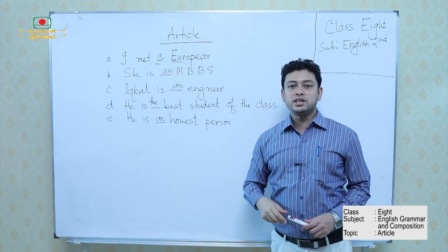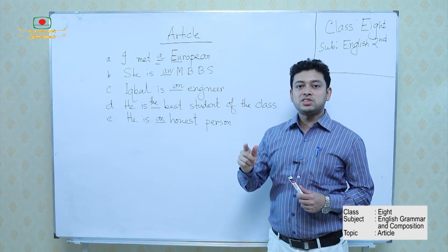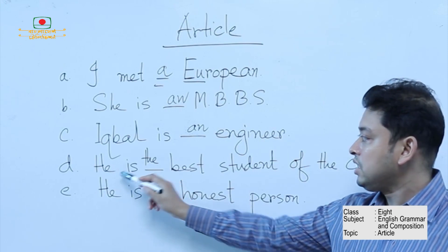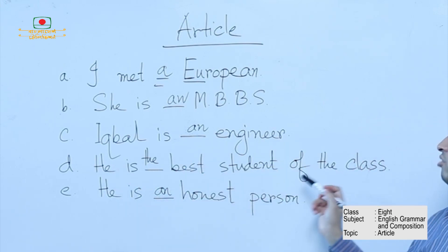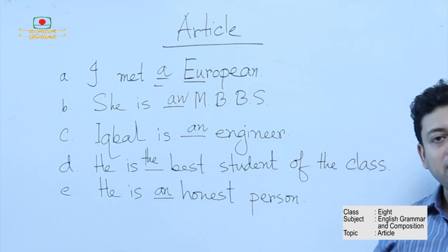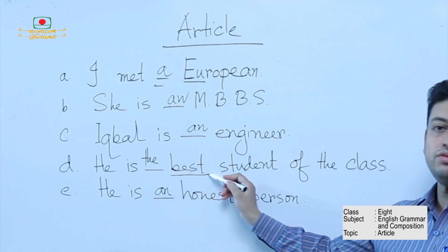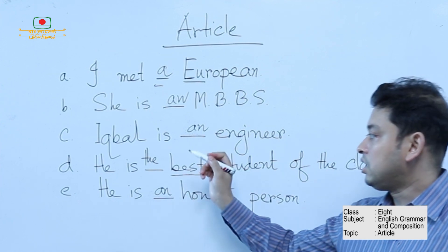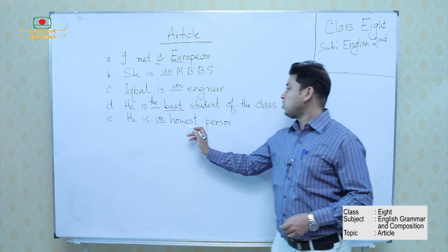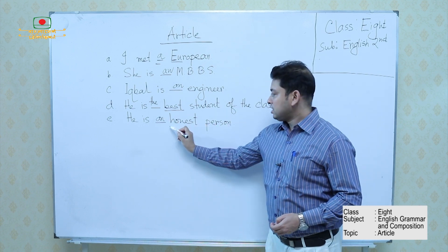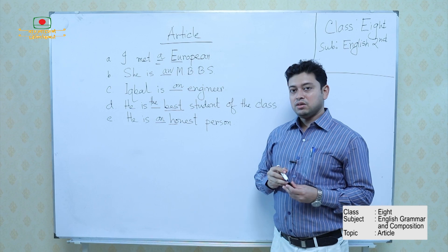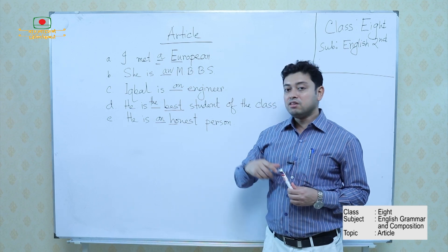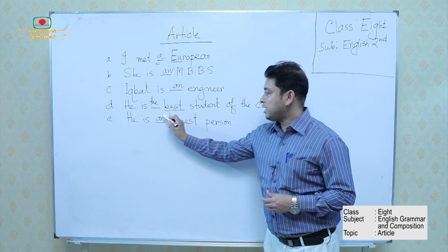Before any rank or profession, we can use A or AN. AN is used because there is a vowel sound. 'He is the best student of the class' — why THE? Because this is the superlative form. We know that before a superlative form, we have to use THE. The last one: 'He is an honest person.' See, there is a consonant letter H, but the sound gives a vowel sound — that's why AN is used.